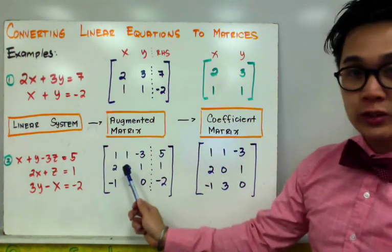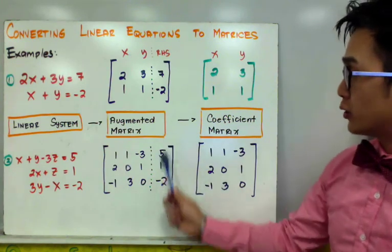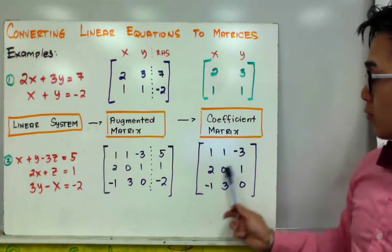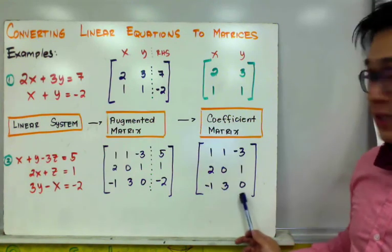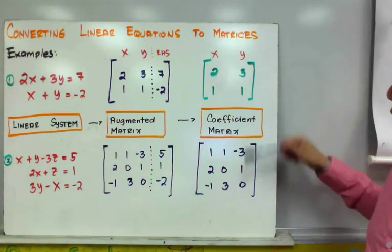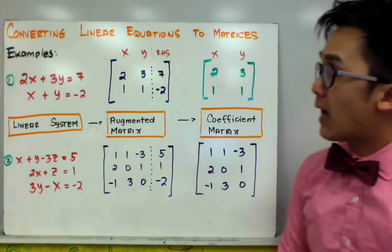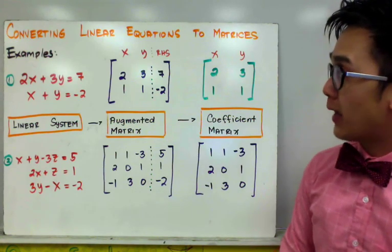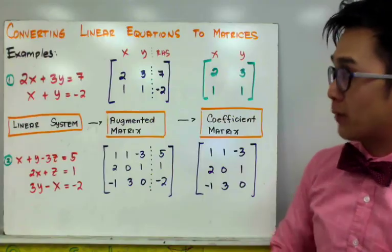To convert the augmented matrix into the coefficient matrix, simply drop the right-hand side. The result is 1, 1, negative 3 / 2, 0, 1 / negative 1, 3, 0 — which is a square matrix for both examples. That is how we apply linear equations by converting them into matrix form.